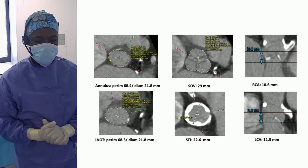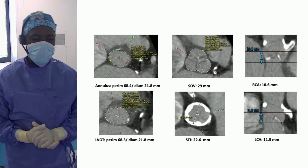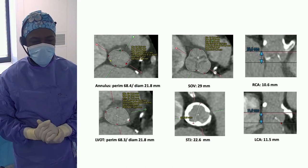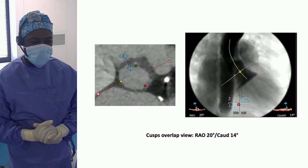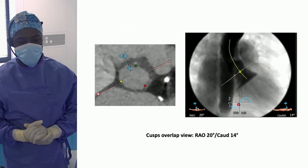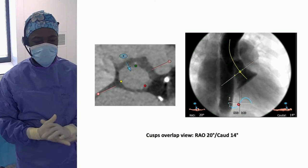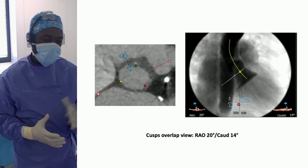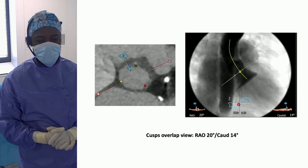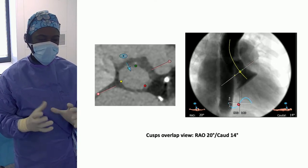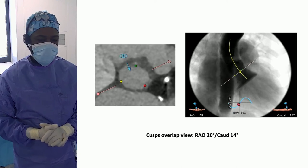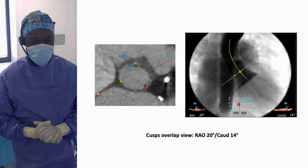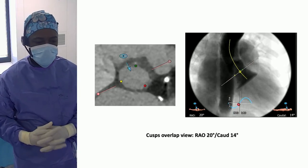This small anatomy has an impact on the final valve choice. The coronary height is acceptable for this lady, but she also has patent grafts on the native vessels. We will work with the cusp overlap view obtained from the CT software — RAO 20, caudal 15 — which should provide a nice overlap of the right and left coronary cusps to safely deploy the device at target, avoiding being too deep and most importantly achieving commissural alignment.